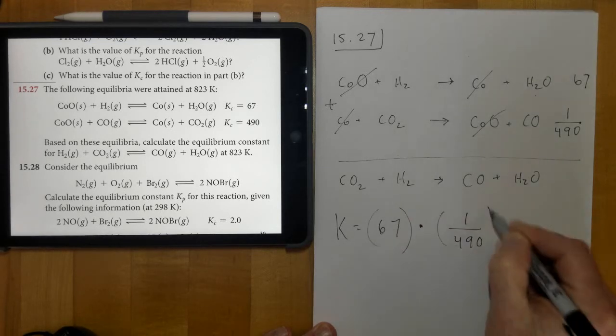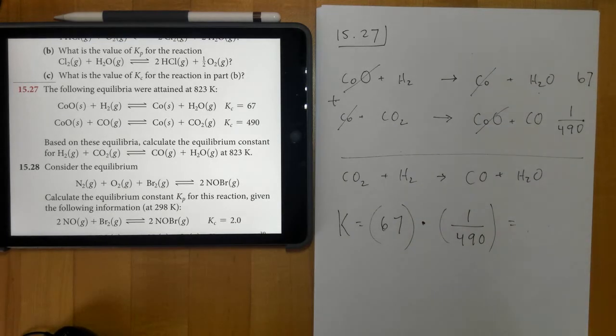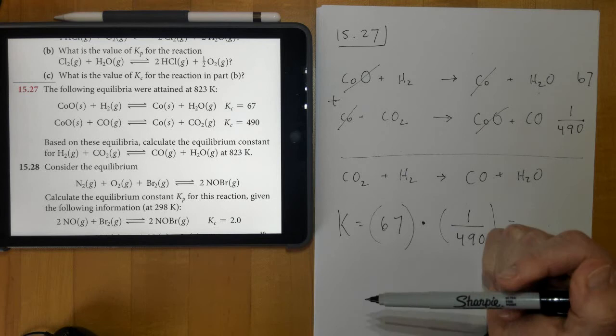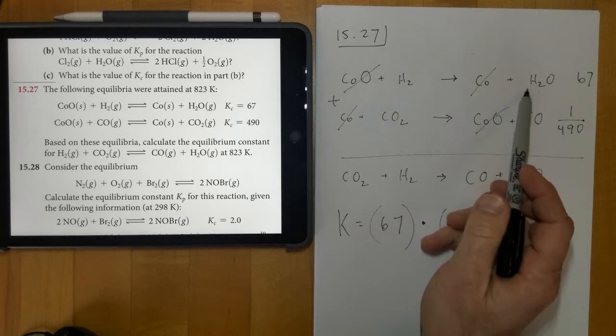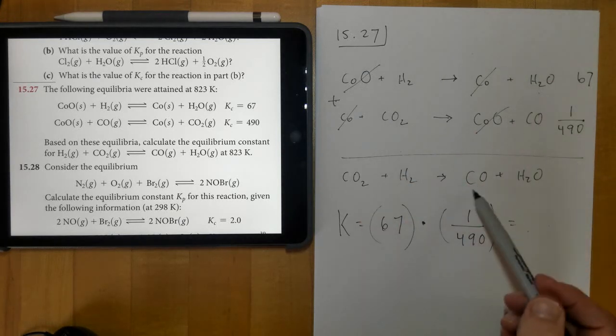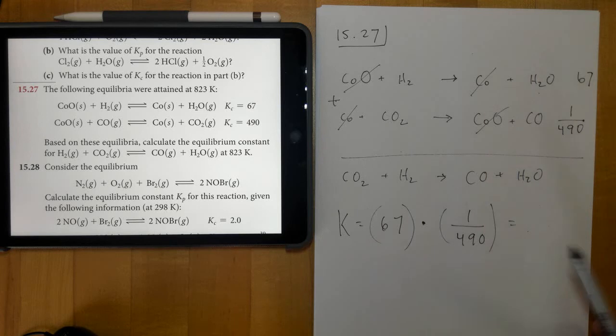And so it'll be 67 times 1 over 490, because whatever mathematical application you do, you always do the one that's a little bit more powerful, and in this case it's multiplication. You could also write the K expressions for these, and you'd find out when you add these two together, you end up multiplying those pieces together.